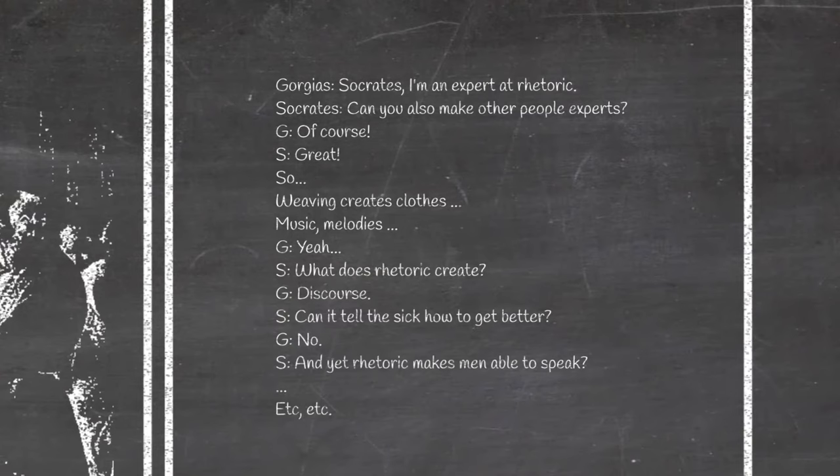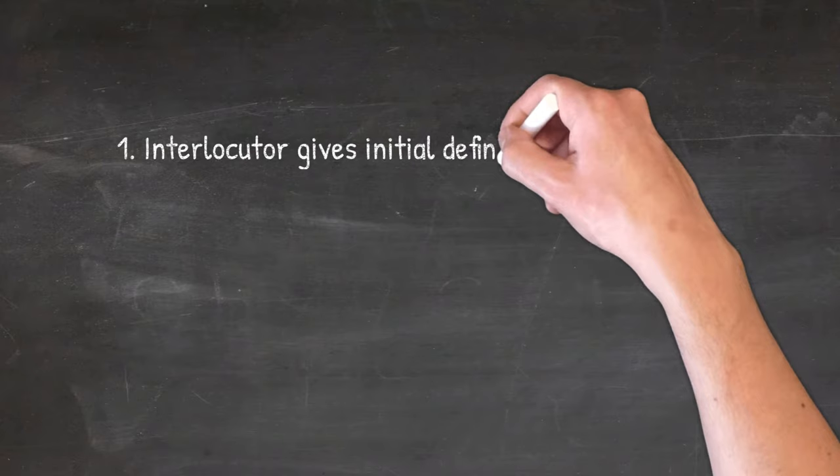There are three main steps. First, the interlocutor, that is, the person involved in a dialogue with Socrates, gives an initial definition or states an opinion on a topic.